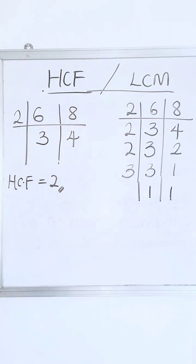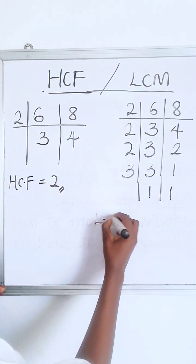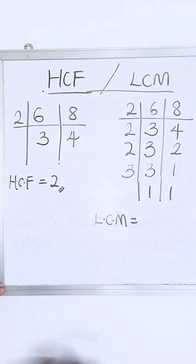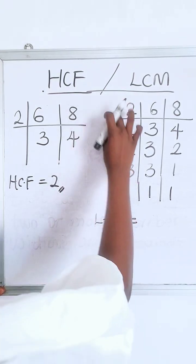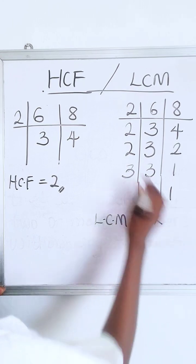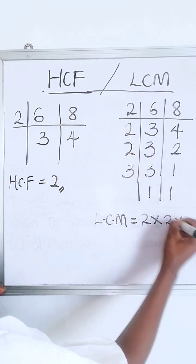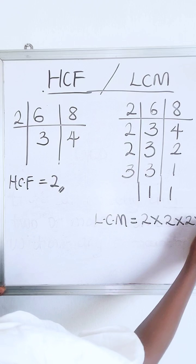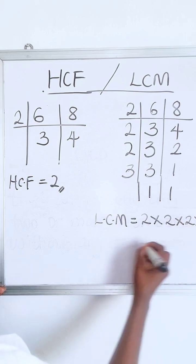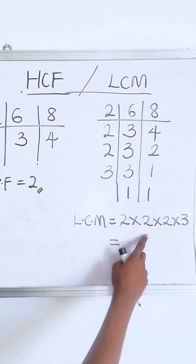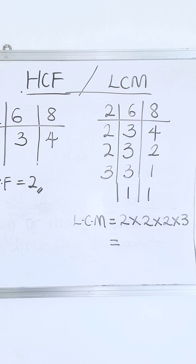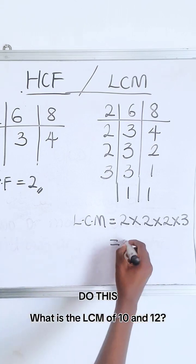So these are the multiples — the LCM of six and eight is two times two times two times three. Two times two is four, four times two is eight, eight times three is twenty-four.